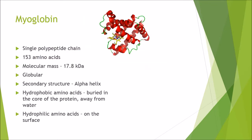Here is a list of properties of Myoglobin. Myoglobin is a single polypeptide chain consisting of 153 amino acids, with a molecular mass of 17.8 kilodaltons. It is a globular protein, and its secondary structure is almost entirely alpha helices, with the exception of some linker regions. The hydrophobic amino acids are buried in the core of the protein, away from water, whereas the hydrophilic amino acids are located on the outside.